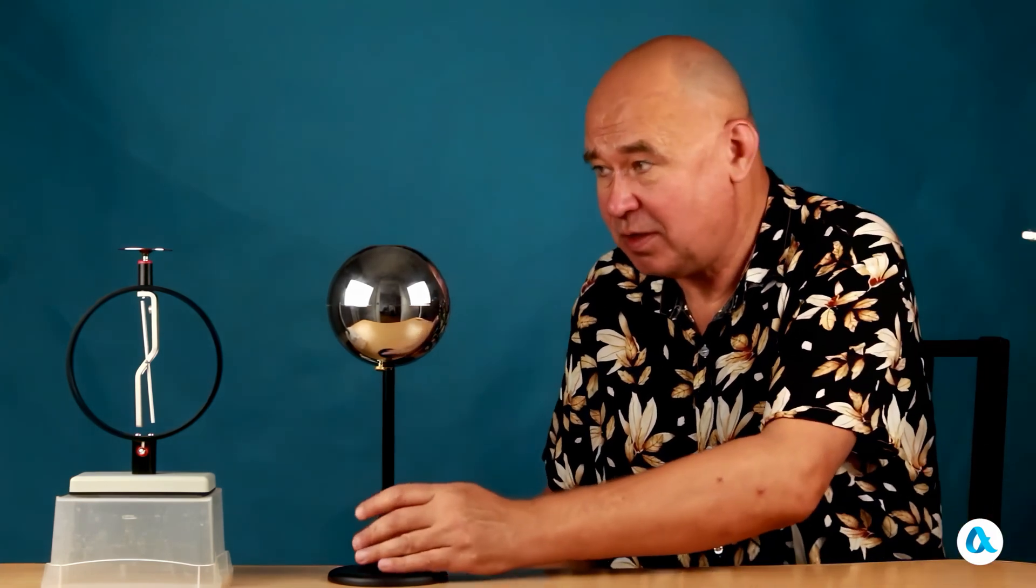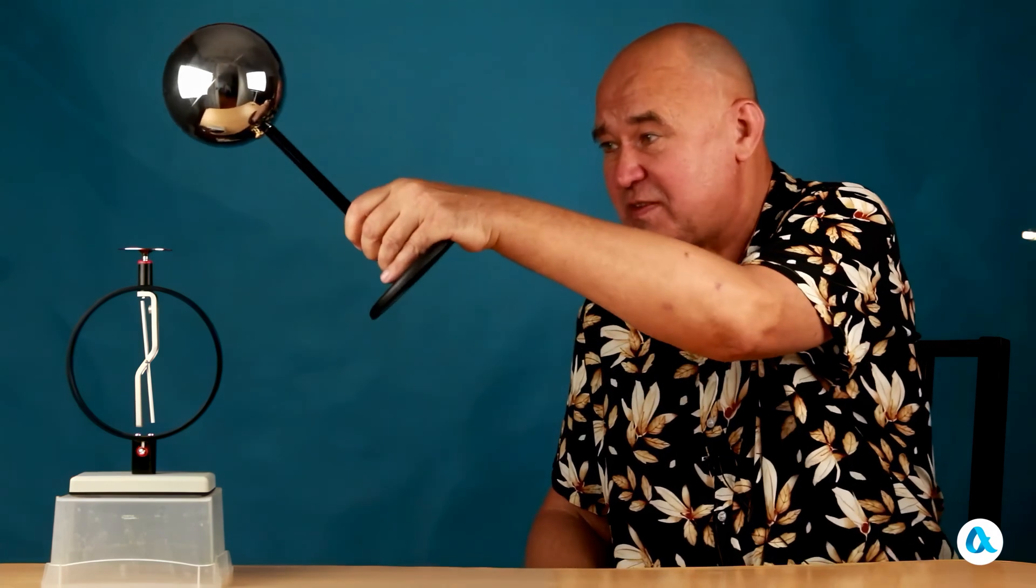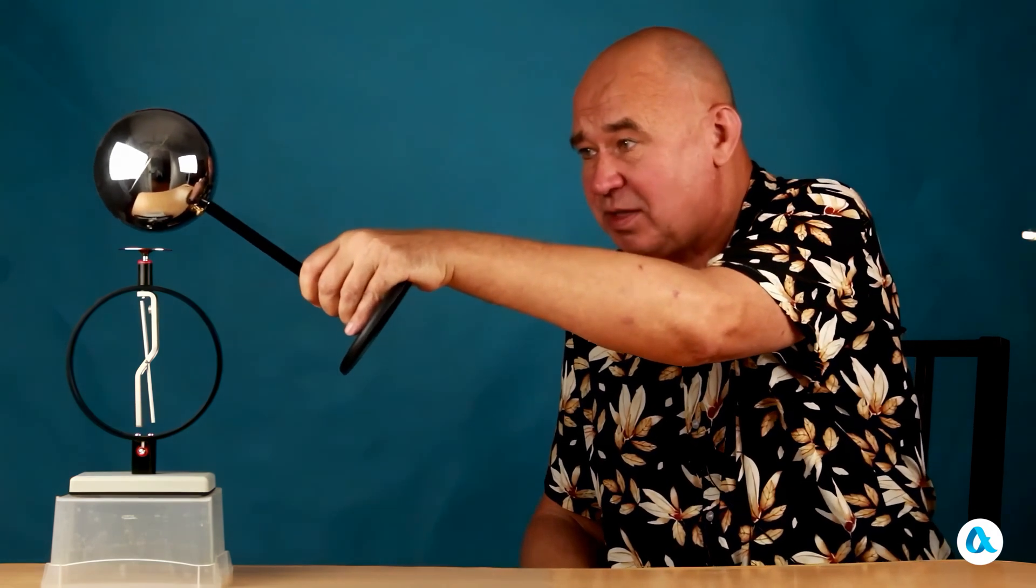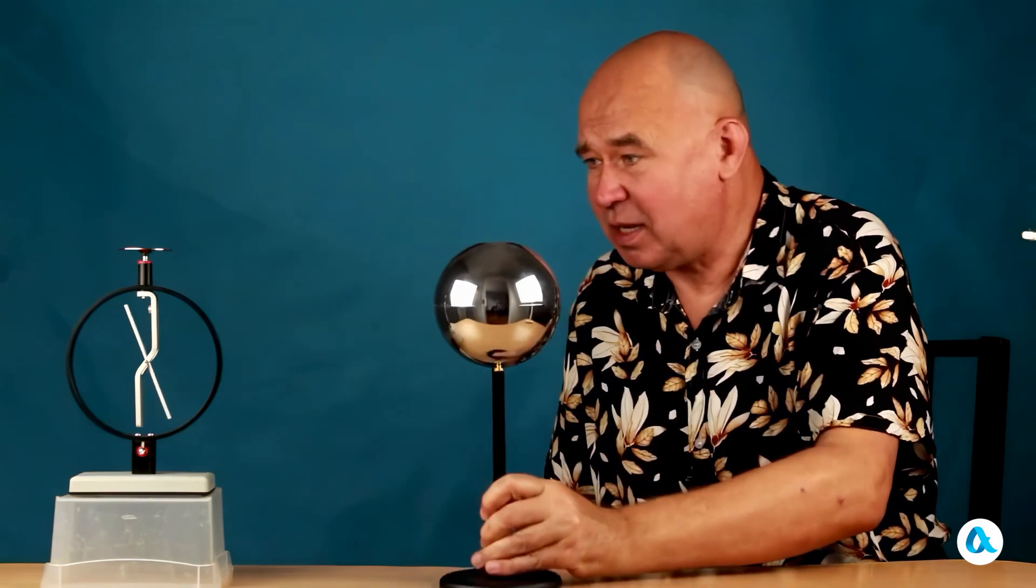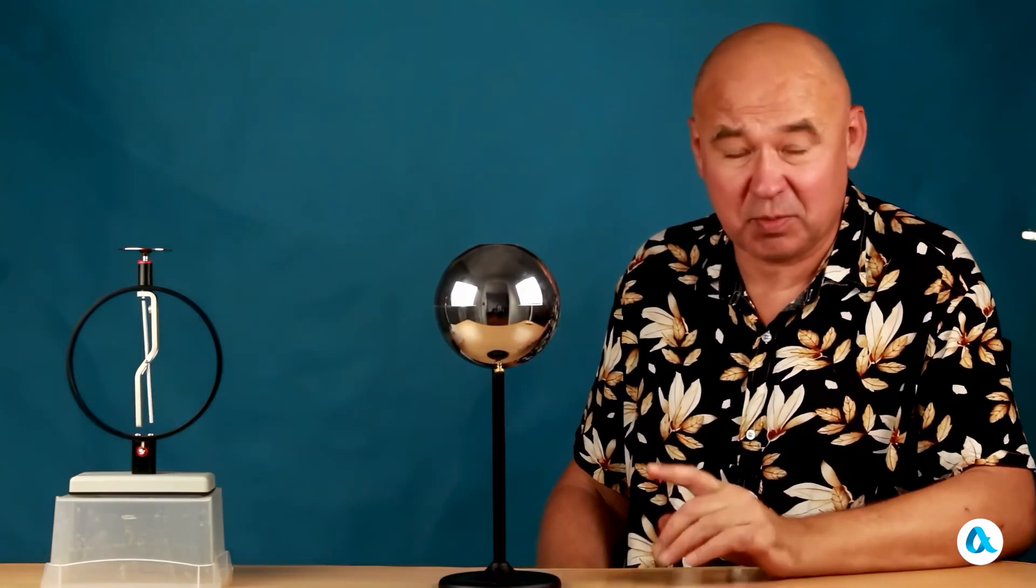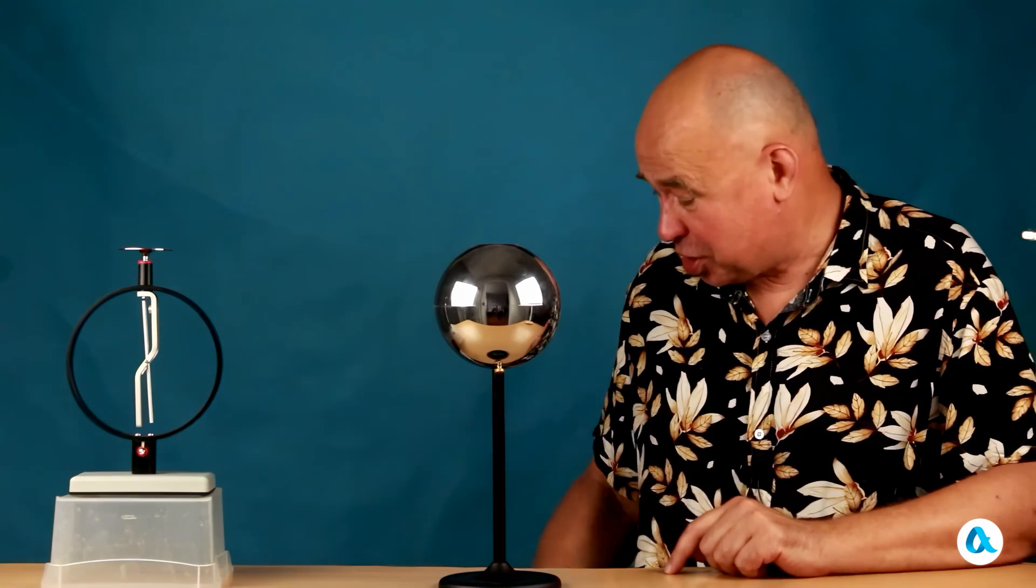Let's proceed further. Next we take the ball, and bring it from above, to the electroscope's disc. And we see that the needle deflects, and when I remove the ball, it returns to its place. We also already know the explanation for this part of the experiment.